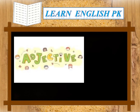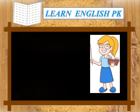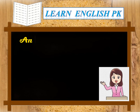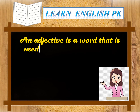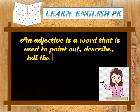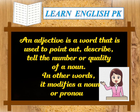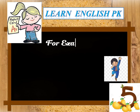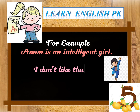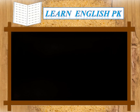Let's start today's lesson. An adjective is a word that is used to point out, describe, tell the number or quality of a noun. In other words, it modifies a noun or pronoun. For example: Anem is an intelligent girl. I don't like that boy. He gave me five mangoes.